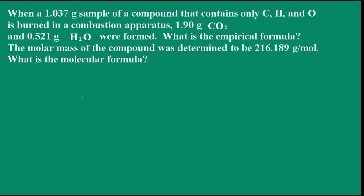What we need to do is find the mass of carbon from the carbon dioxide, and find the mass of hydrogen from the mass of water that was formed. From that information, we can then determine the mass of oxygen in the compound. Finally, we can determine the empirical formula. We're given the molar mass of the compound, and from that we can determine the molecular formula.